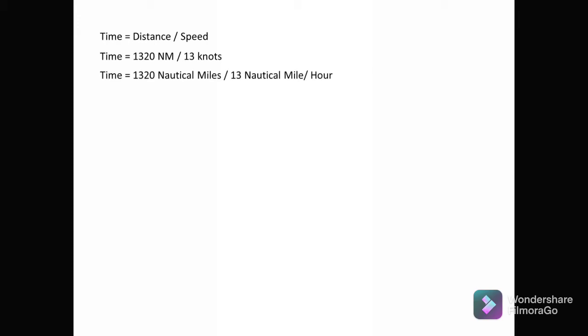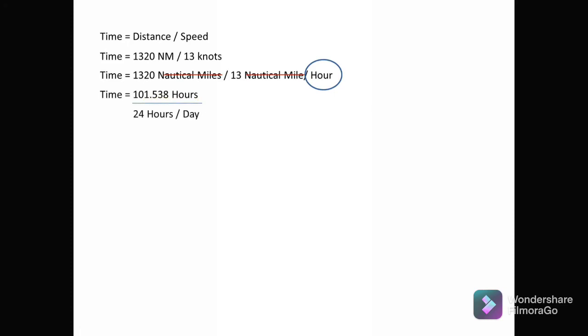Time = Distance / Speed, so time = 1,320 nautical miles ÷ 13 knots (nautical miles per hour). The nautical mile units cancel out, leaving hours. The result is 101.538 hours. We then divide by 24 to convert to days, since there are 24 hours per day — this tells us how many days are within 101.538 hours.